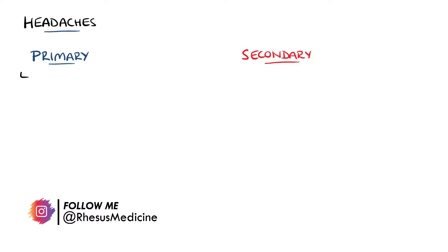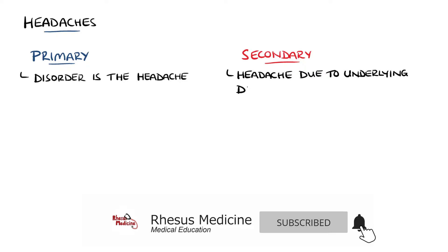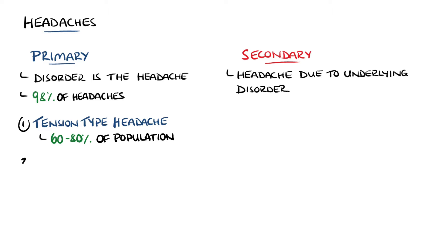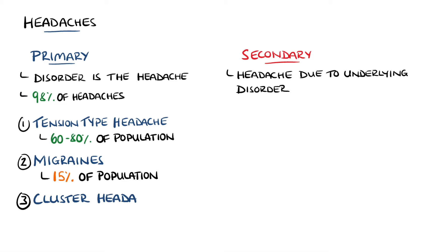Headaches are a very common symptom that are divided into primary and secondary headaches, where in primary headaches the headaches themselves are the disorder, while secondary headaches are the result of an underlying condition. Around 98% of headaches are primary headaches, and the most common types are tension-type headaches, affecting around 60-80% of the population, migraines, which affect around 15%, and cluster headaches, which affect around 0.1% of the population.